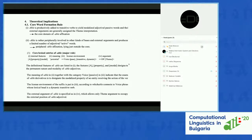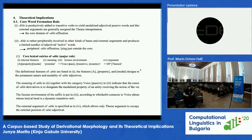Let's go on to slide nine. Section four: theoretical implications. We have shown that: one, -able is productively added to transitive verbs to yield modalized passive adjectives, and the external arguments are generally assigned the theme interpretation; and two, -able is rather peripherally involved in other kinds of bases and other sorts of external arguments, producing active words. The former process constitutes the core domain of -able affixation, and the latter is called peripheral -able affixation, lying just outside the core. Let's discuss core -able affixation first.